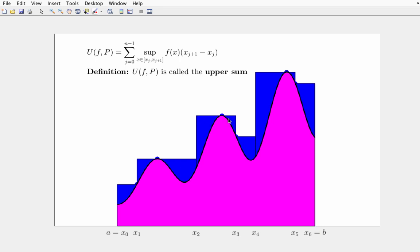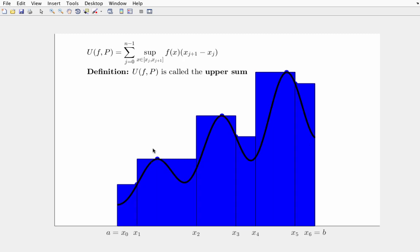And this sum of rectangular areas for a particular partition is called an upper sum. And again, as we can see why, because we get an area that is greater than or equal to the integral if that integral area exists.